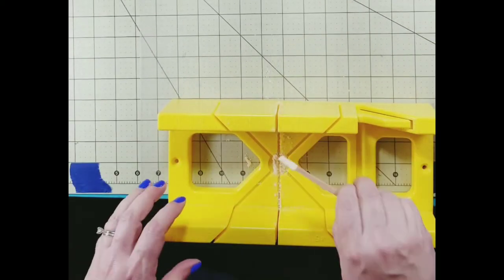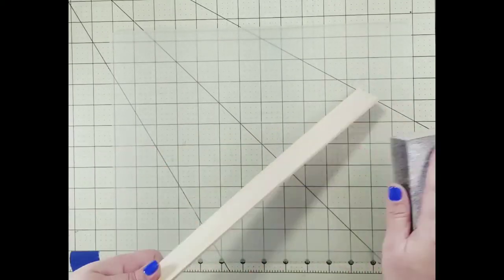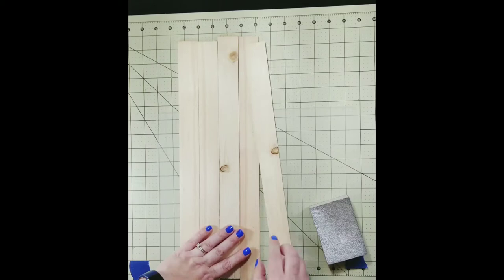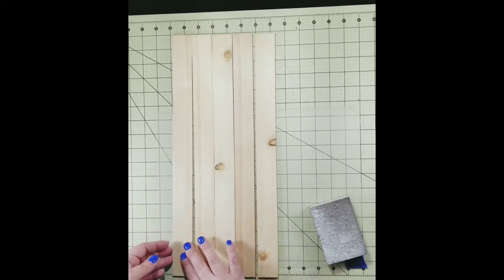Once you get all your pieces cut you're going to take a sanding block and smooth out all the edges. Now you'll see that I have five sticks here and in the end I end up using six altogether.